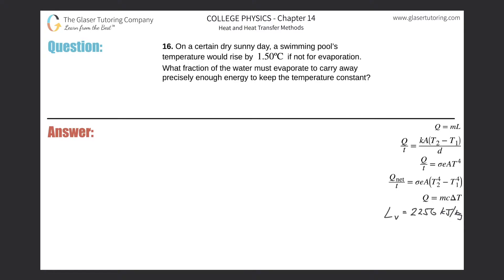Number 16: On a certain dry sunny day, a swimming pool's temperature would rise by 1.5 degrees Celsius if not for evaporation. What fraction of the water must evaporate to carry away precisely enough energy to keep the temperature constant?